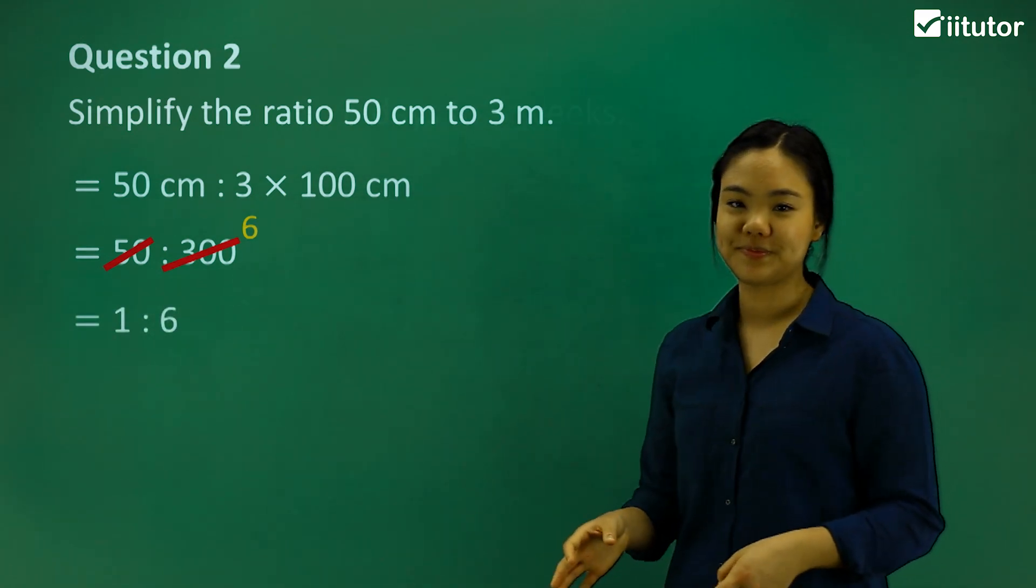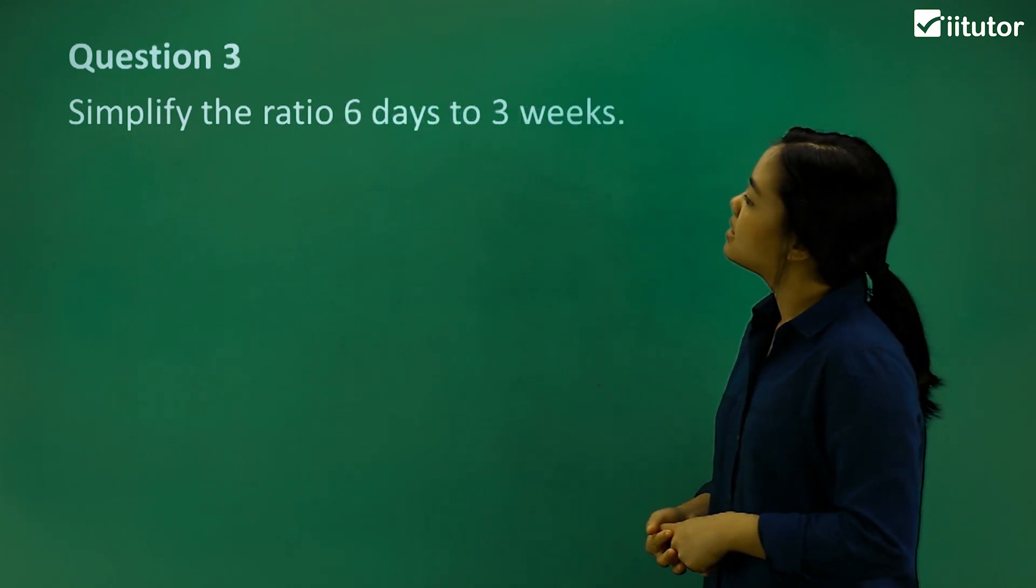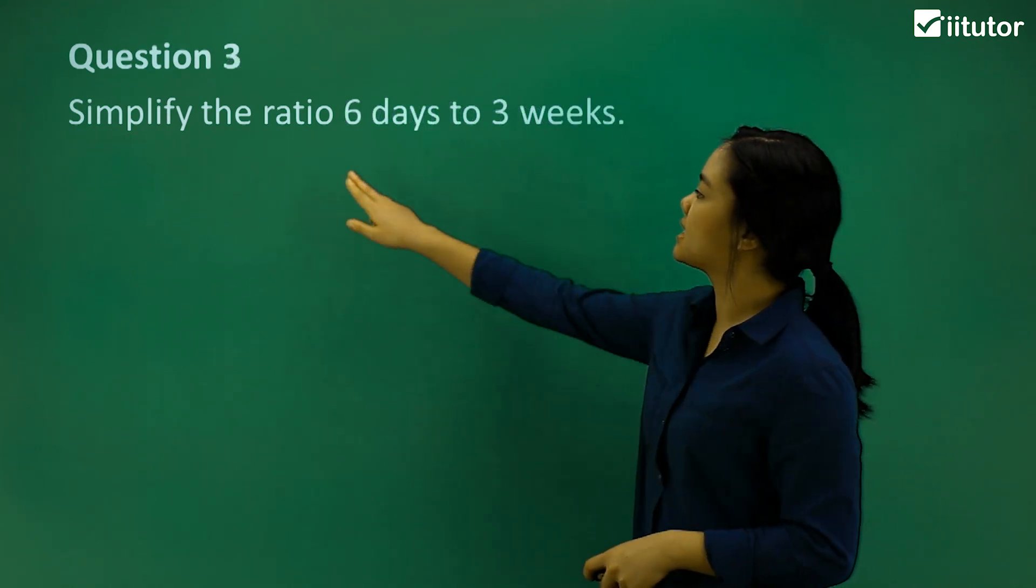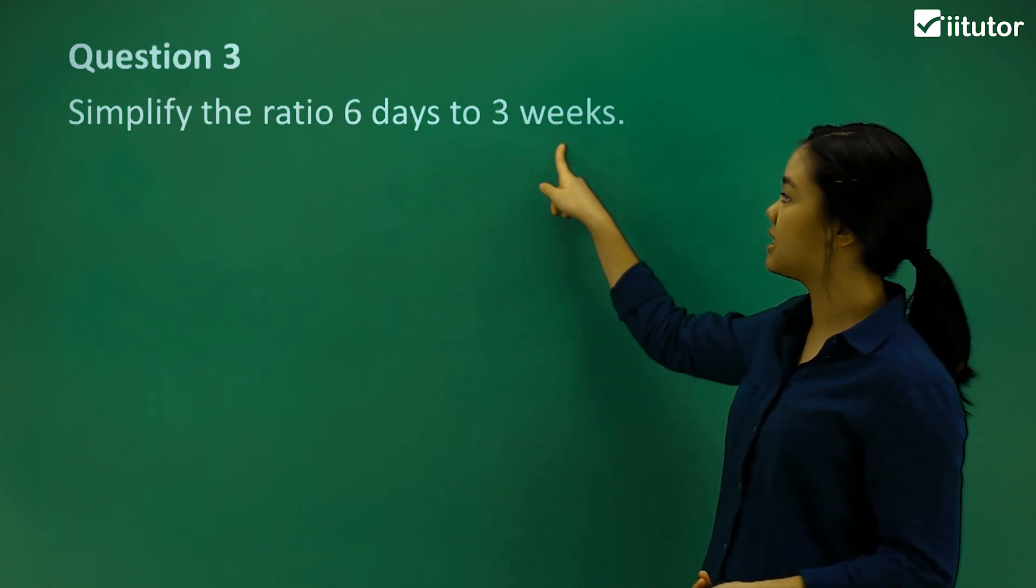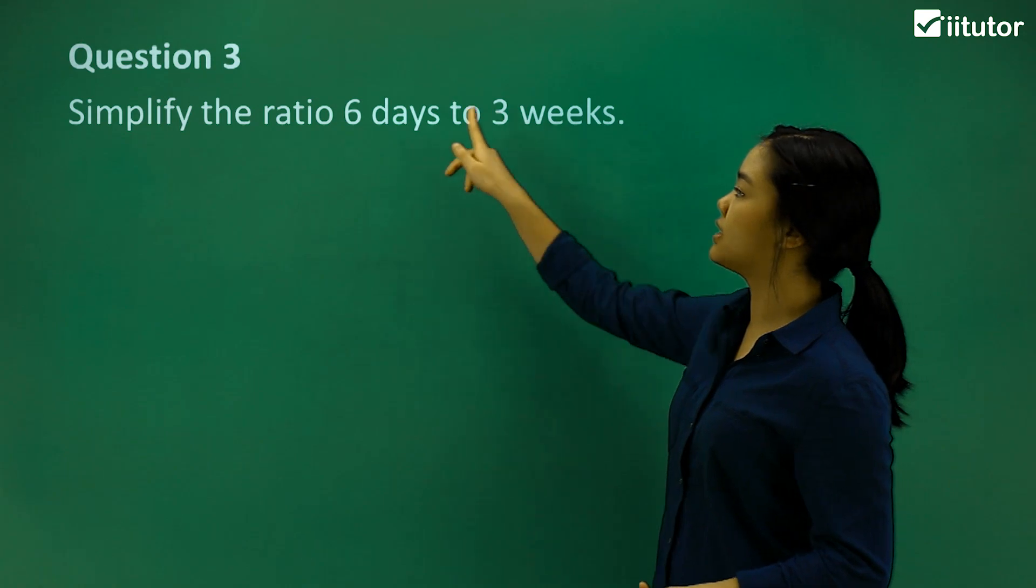Let's try question 3. Simplify the ratio of 6 days to 3 weeks. Again, let's change the unit of measurements. We'll change it to days.